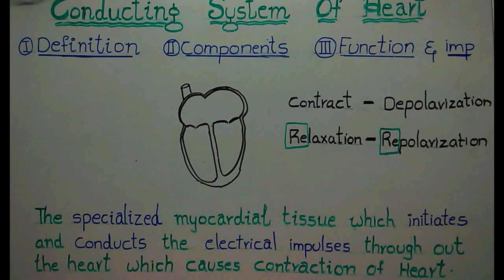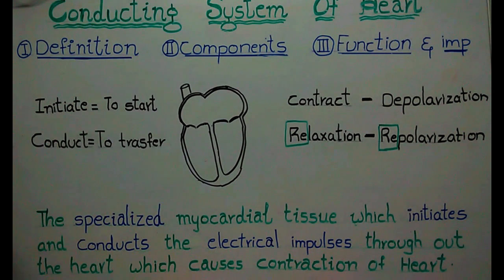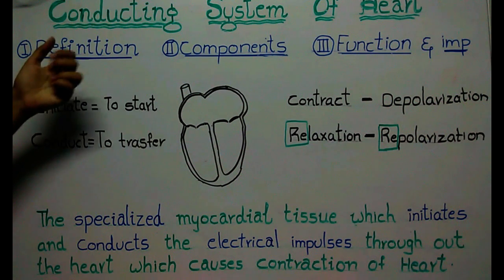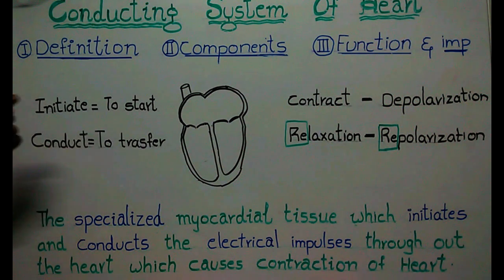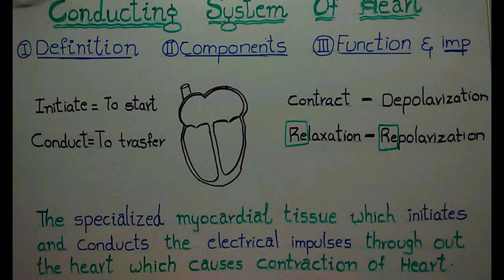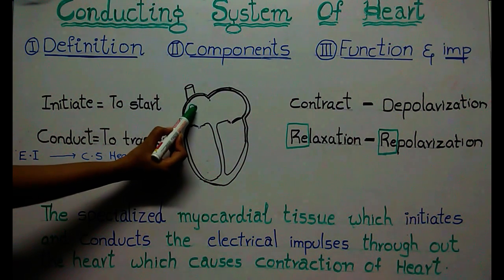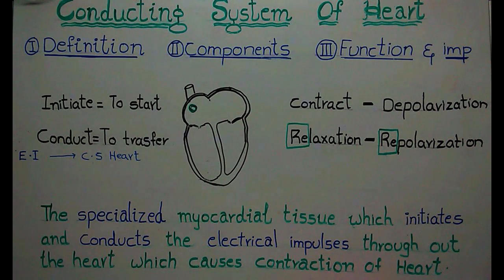As we all know, the heart is a blood-pumping organ. It has to contract and relax all the time to pump blood to various parts of our body. How does this contraction and relaxation occur? There is a specialized tissue, and the specialization of this tissue is that it can initiate — meaning start — electric impulses on its own.